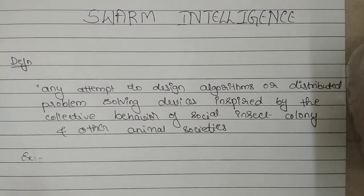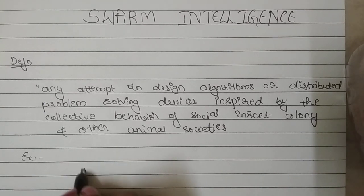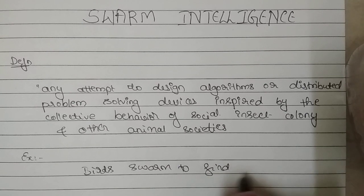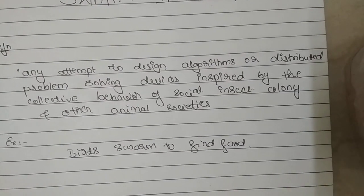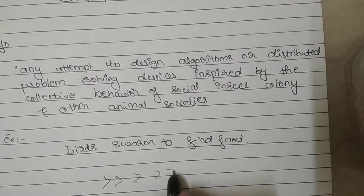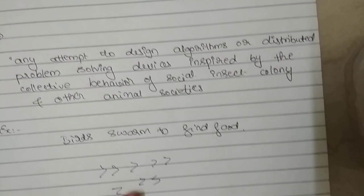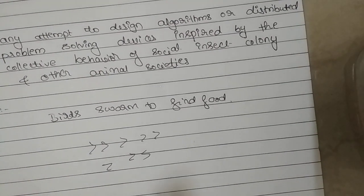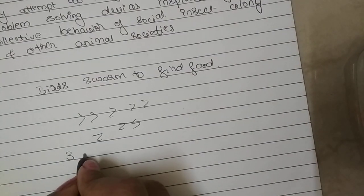Let's take an example and proceed further. Consider birds — birds swarm to find food. You would see all the birds traveling in the same direction. There are basically three simple rules that govern this behavior.